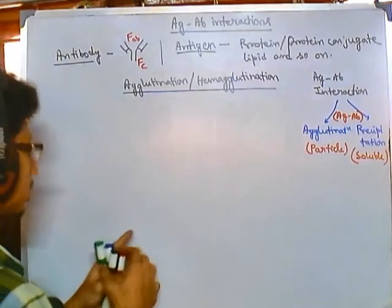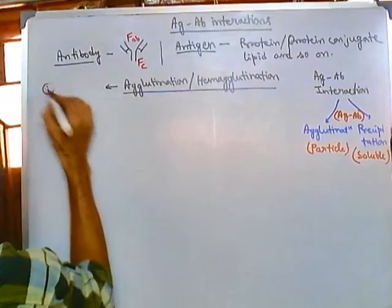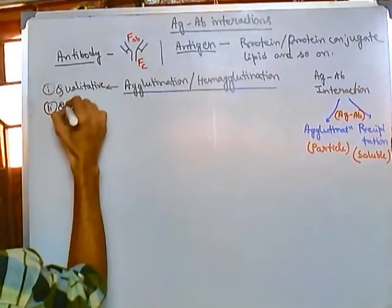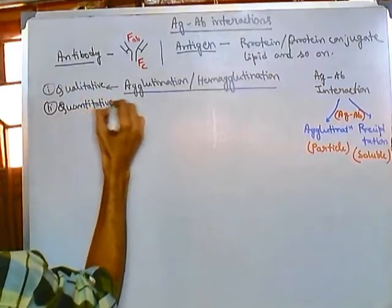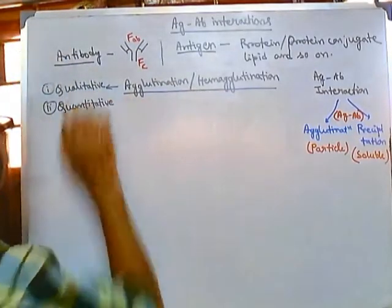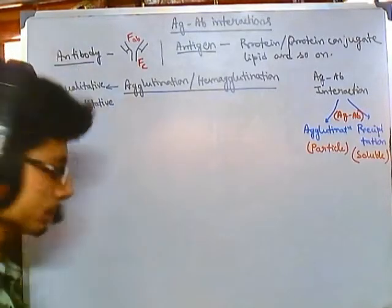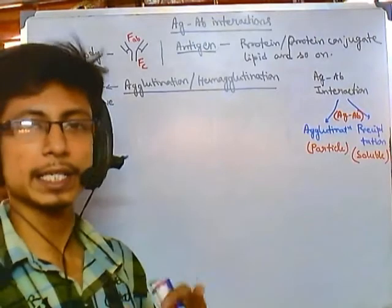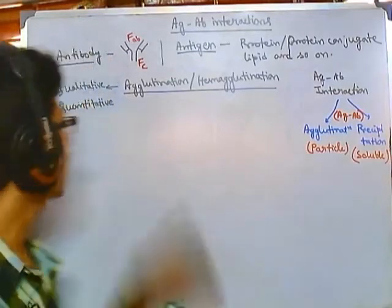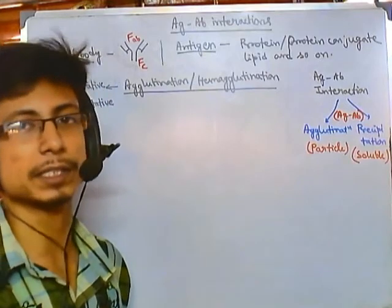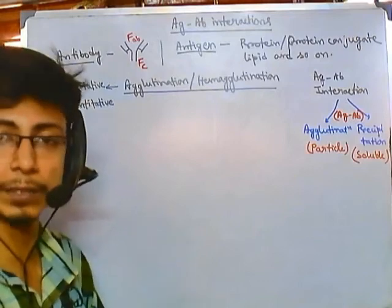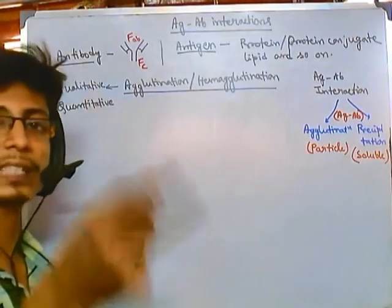The process of hemagglutination or agglutination can be further divided into two different segments: one is qualitative type and another one is quantitative type. The qualitative type will only tell us whether there is any agglutination present or not — whether any antigen or antibody is interacting. But the quantitative type tells us the amount of antigen or antibody present in our sample. Quantitative gives more detailed information about concentration, while qualitative simply tells whether it is present or not.